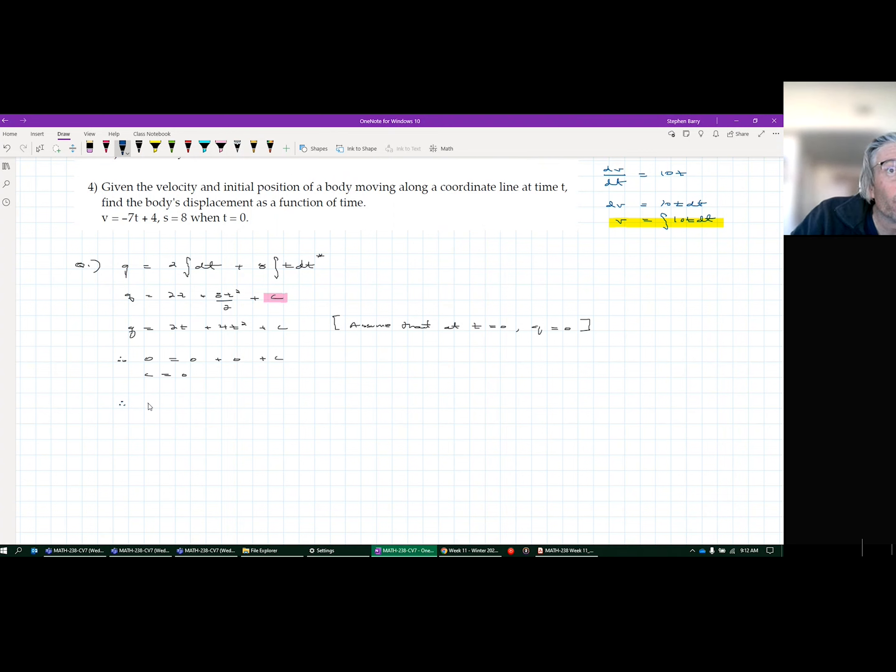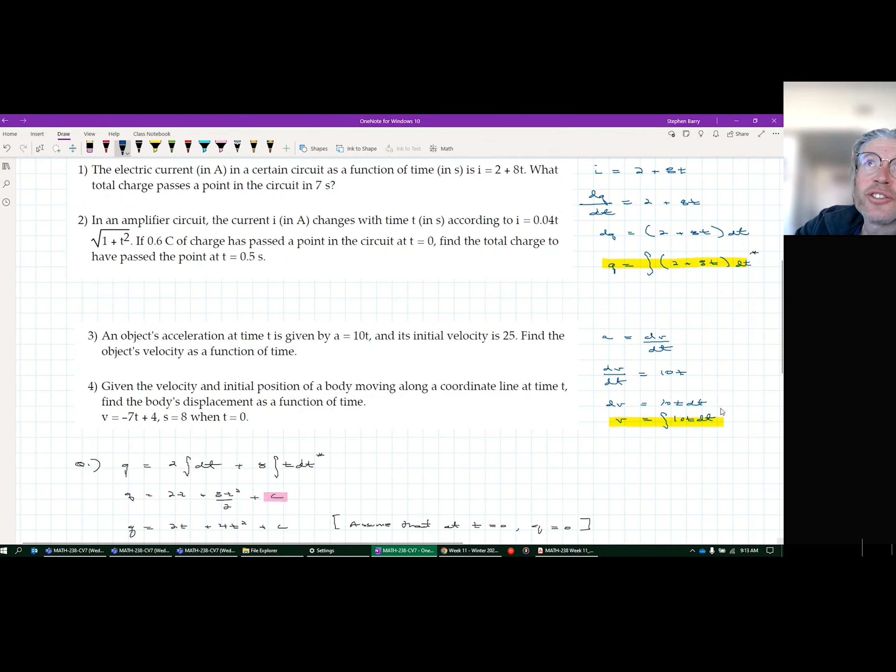Therefore, your equation is Q equals T squared plus 4T squared. And now you can solve for T equals seven. That gives 210. Put your units in there. See if you can get question two.